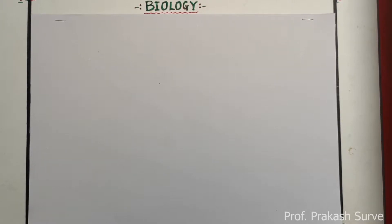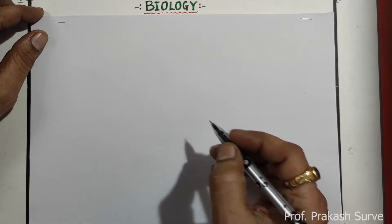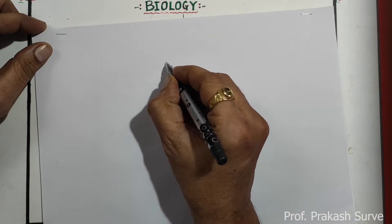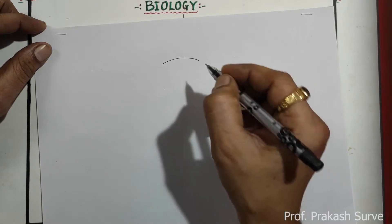Welcome dear students, now today we will see about how to draw male reproductive system step by step. First we'll draw the bladder, so make one line like that.